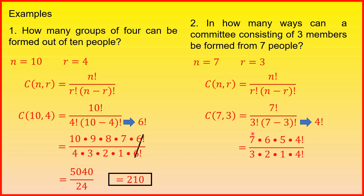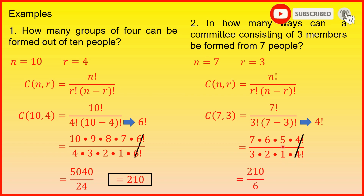Then, yung ating 3 factorial dito sa ating denominator, pwede na natin isulat siya as 3 times 2 times 1 times yung 4 factorial natin dito. Then, yung ating numerator naman ay 7 times 6 times 5 times 4 factorial. Then, pwede na natin i-cancel ito. I-multiply na natin yung 7, 6, and 5, and that is equal to 210. Then, yung denominator natin na 3 times 2 times 1 is equal to 6. Dividing these two numbers, that is equal to 35. So, ang final answer natin dito ay 35.